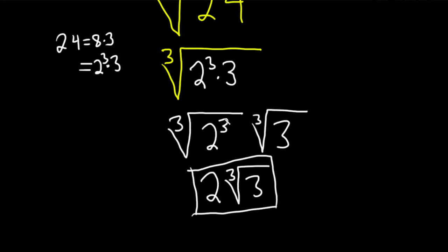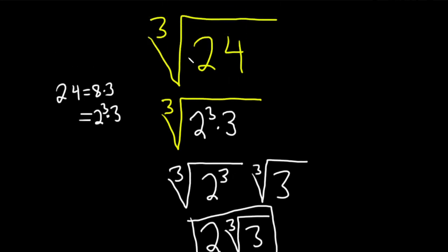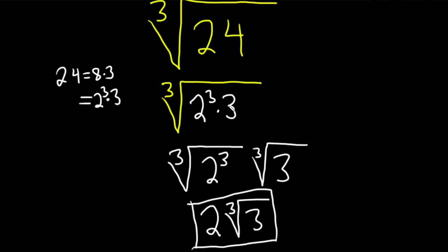So again, step 1, you want to take your number and basically write it as a product of primes. And then you want to write everything you can to the third power.